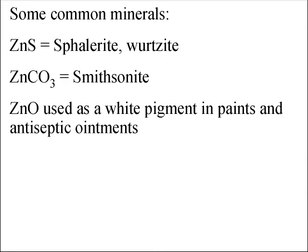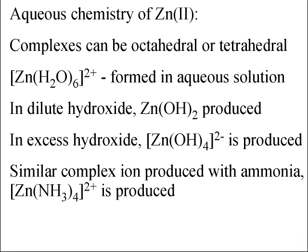Common minerals of zinc include sphalerite and wurtzite, which are forms of zinc sulfide, and smithsonite, which is zinc carbonate. Zinc oxide is used as a white pigment in pastes and in some antiseptic ointments. In aqueous solution, the hexaaqua ion is formed with octahedral geometry. In dilute hydroxide, zinc hydroxide precipitates, but in excess hydroxide the tetrahydroxyzincate ion is produced, with tetrahedral geometry. Similar complex ions are produced with ammonia — in this case the tetraamine zinc(II) ion is produced, which is also tetrahedral.